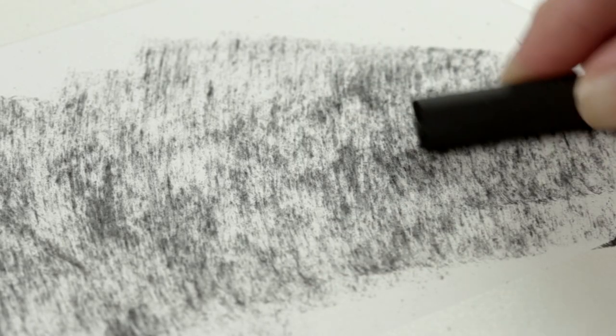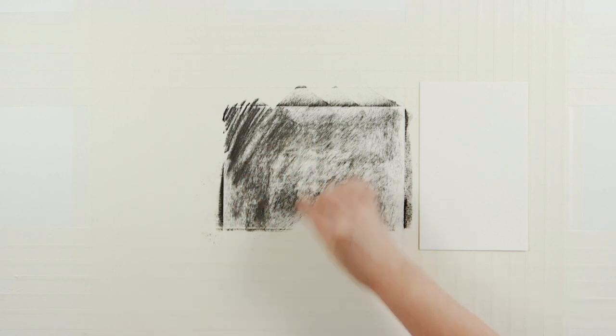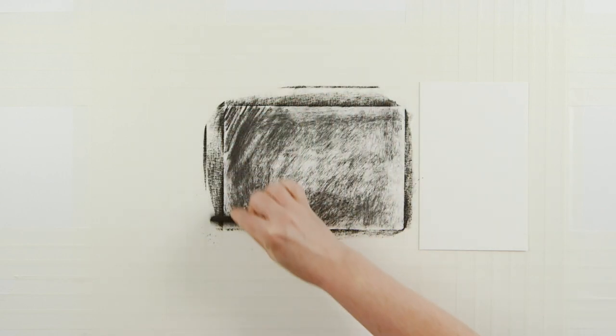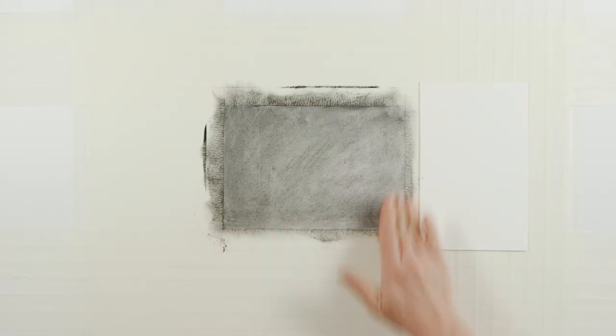Now I'm going to show you how you can increase the density of your charcoal using layers of spray fixative. To demonstrate this, I will mask an area and put down a layer of charcoal, which I will spray in order to fix the charcoal on the paper.